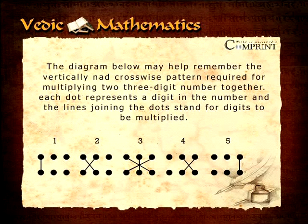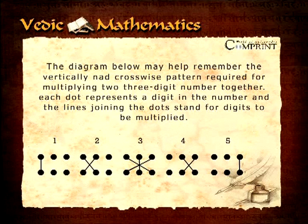The diagram shown below may help remember the vertically and crosswise pattern required for multiplying two three digit numbers together. Each dot represents a digit in the number and the lines joining the dots stand for digits to be multiplied.